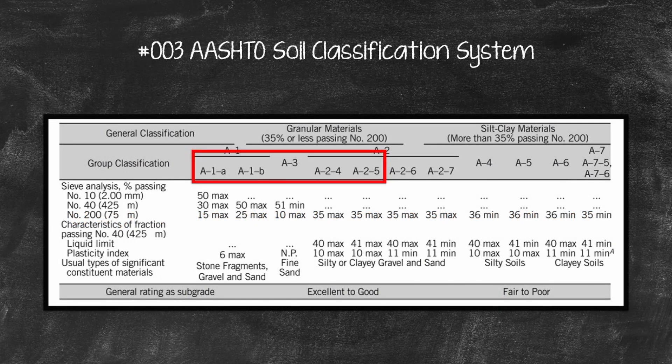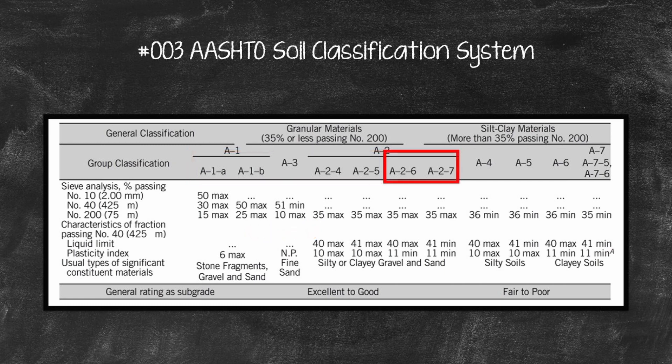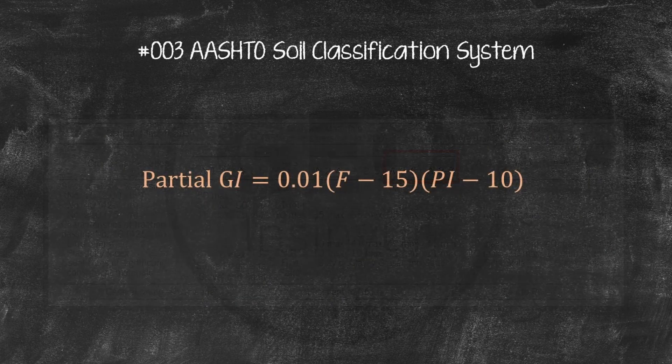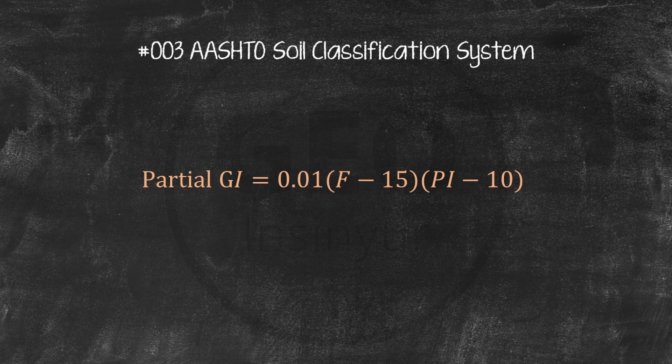GI for groups A1A, A1B, A24, A25, and A3 is 0. For groups A26 and A27, the partial group index, PGI, is used.